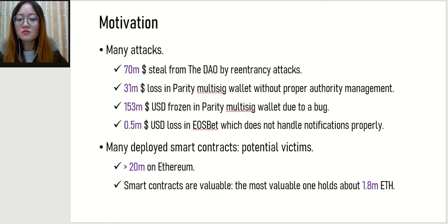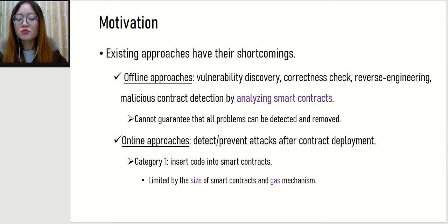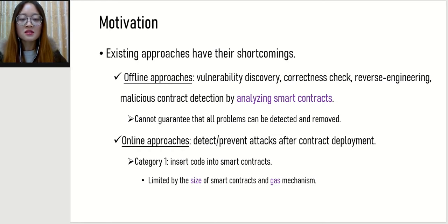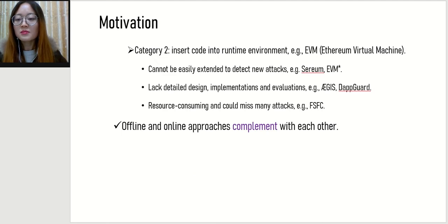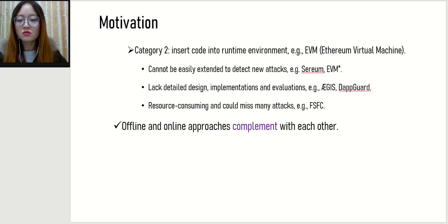First, many attacks have occurred in practice. For example, $70 million are stolen from the DAO contract due to re-entrancy attacks. Second, there are a huge number of deployed smart contracts, and many of them are valuable — they are potential victims. Existing approaches can be divided into offline and online approaches. Offline cannot guarantee that all problems are detected and removed. For online approaches, some are limited by the size of smart contracts and disincentivized by the gas-costing ether. Some cannot be easily extended to detect new attacks, lack detailed design implementations and evaluations, or are resource-consuming and could miss many attacks.